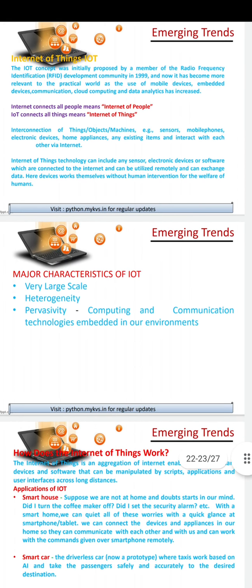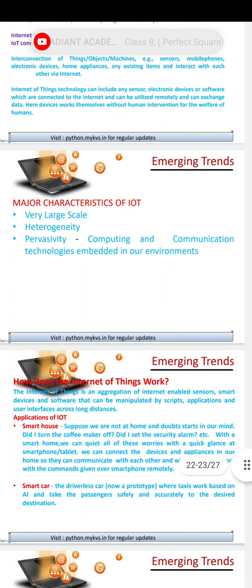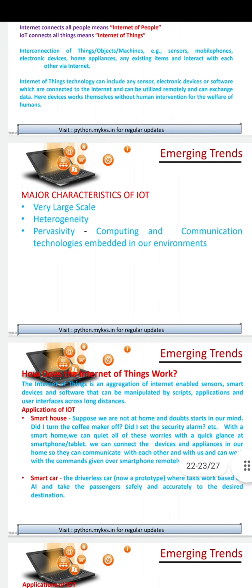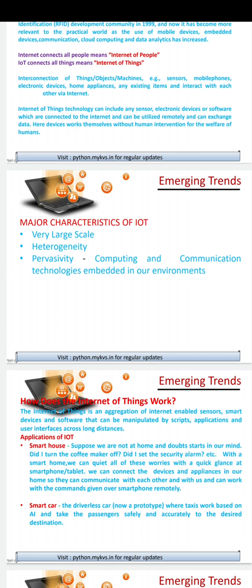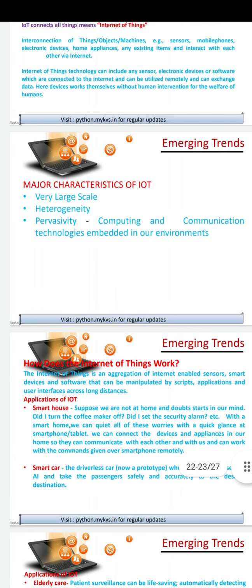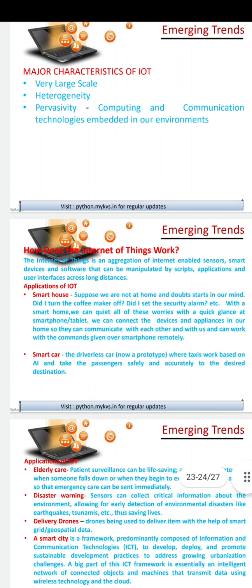Next is IoT — Internet of Things. The IoT concept was initially proposed by a member of the radio frequency identification development community in 1999. Internet of Things means the interconnection of objects — sensors, mobiles, and devices. Internet is for people; IoT connects all things, meaning it is for machines and devices to use.